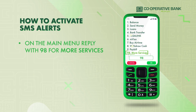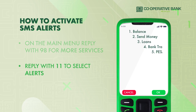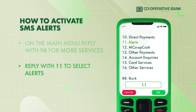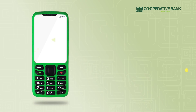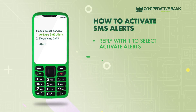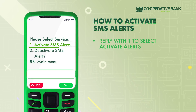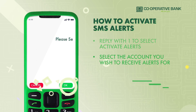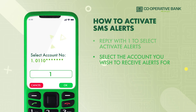On the main menu, reply with 98 for more services. Reply with 11 to select alerts. Reply with 1 to select activate alerts. Select the account you wish to receive alerts for.